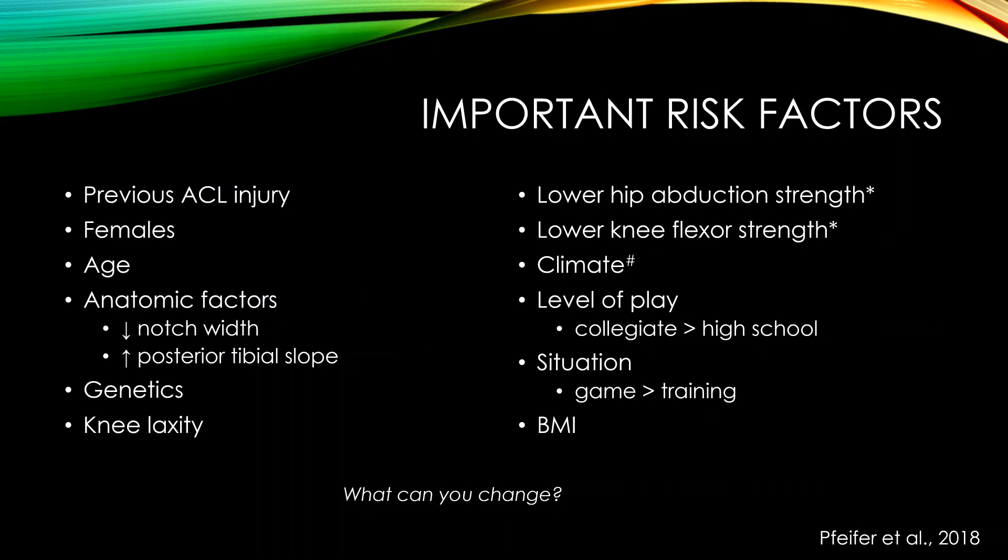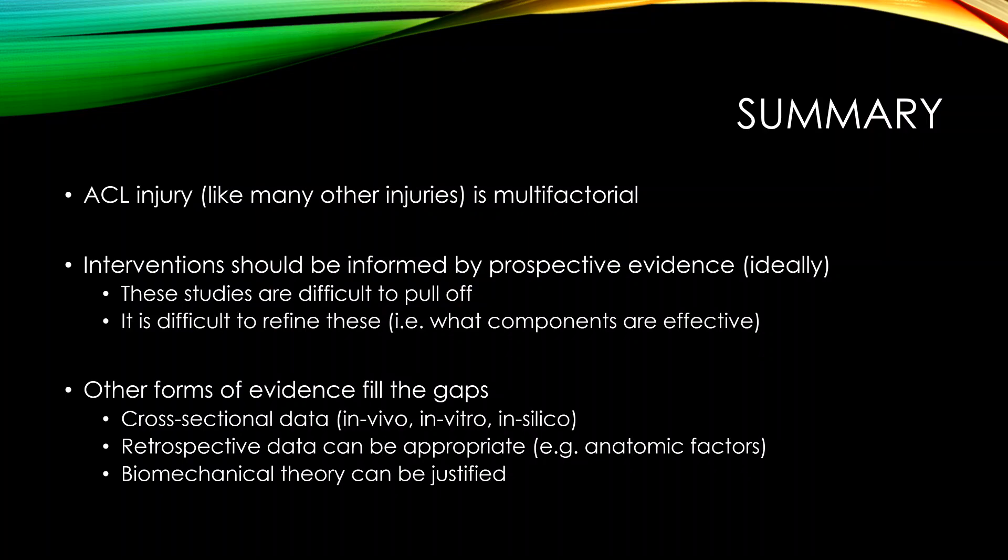To sum up this video series: ACL injury, like many other injuries, is multifactorial - there's no one factor that leads to it, so we need to consider a lot of different things. Any interventions we try to come up with to prevent ACL injury should ideally be informed by prospective evidence. Keep in mind these studies are very difficult to pull off because you need large numbers and long follow-up times. It's also difficult to refine these studies because ACL injury interventions are often very heterogeneous with many different protocol components, making it hard to know which components are effective.